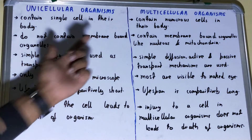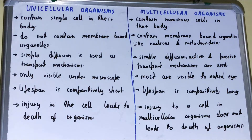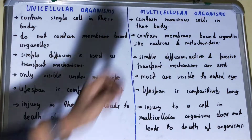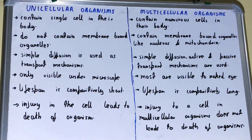The next thing: if we talk about the unicellular organisms, they do not contain membrane-bound organelles. But if we talk about the multicellular organisms, they do contain membrane-bound organelles like the nucleus and mitochondria.